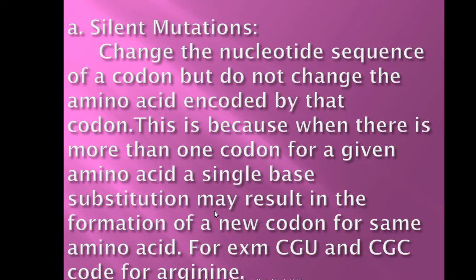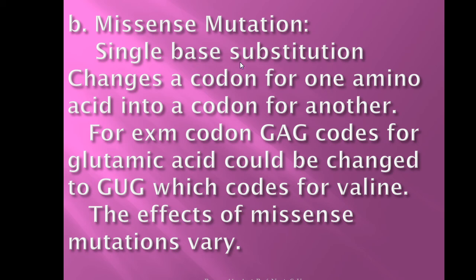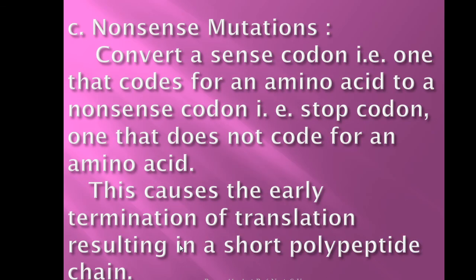Silent mutation changes the nucleotide sequence of a codon but does not change the amino acid encoded, because more than one codon can code for the same amino acid. For example, CGG and CGC both specify arginine — this is a silent mutation. Missense mutation involves a single base substitution that changes a codon for one amino acid into a codon for another; for example, GAG codes for glutamic acid and is changed to GUG which codes for valine, so the amino acid sequence changes.